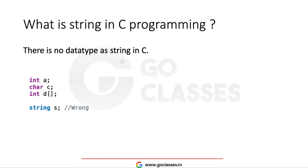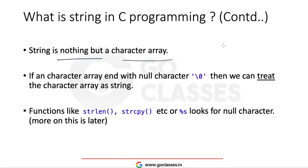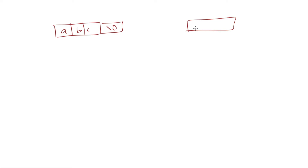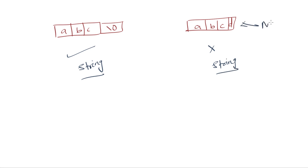Now let's see what a string is in C programming. There is actually no data type called string in C, meaning you cannot write 'string s' — this is wrong. So how do we declare a string? A string is nothing but a character array. You can treat a character array as a string when that character array ends with a null character.